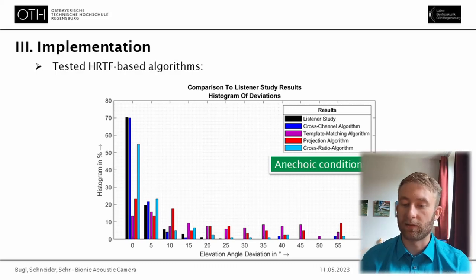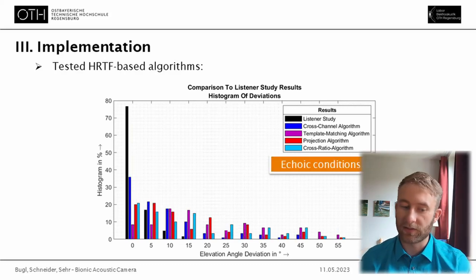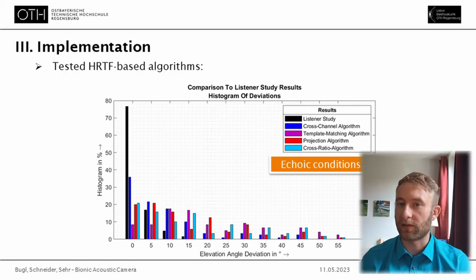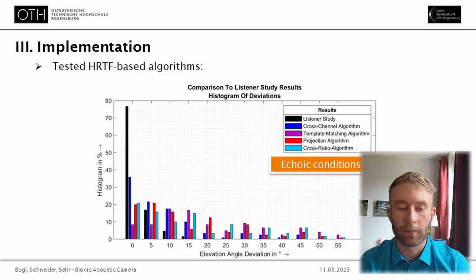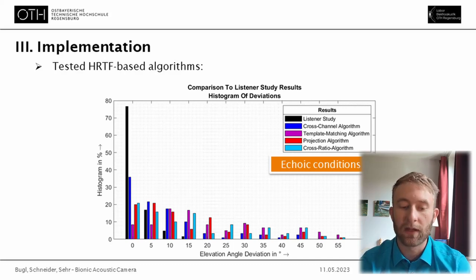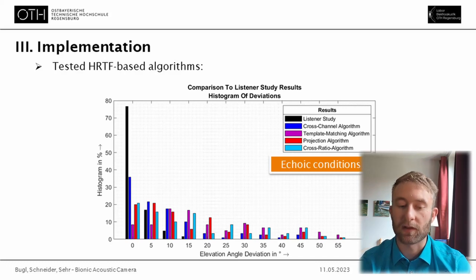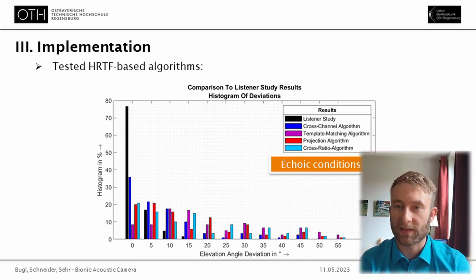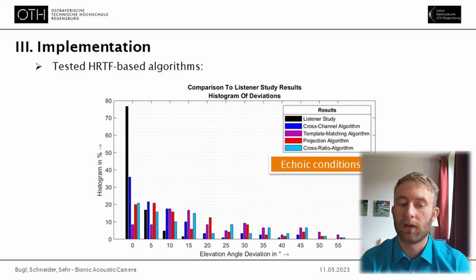The test looked very different in echoic conditions. Here the listeners were still able to detect sound sources more or less unbothered by the reverberation and reflections in the room, but the algorithms were highly distracted. This goes to show that spatial hearing is far more robust to reverberation than the tested algorithms.